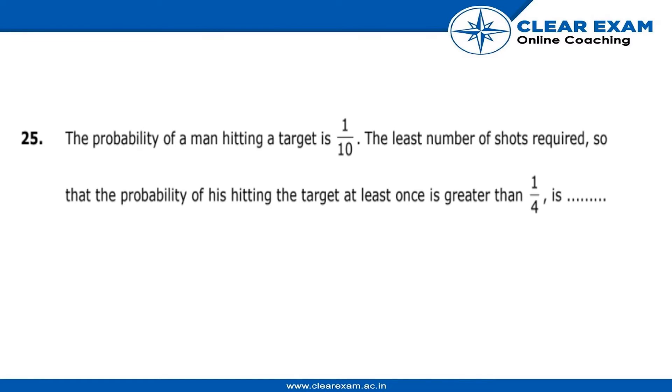The question is, if the probability of a man hitting a target is 1 by 10, the least number of shots required so that the probability of his hitting the target at least once is greater than 1 by 4 - we have to find that least number of shots.